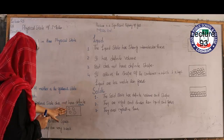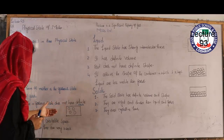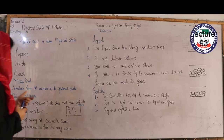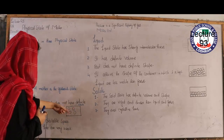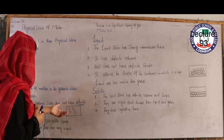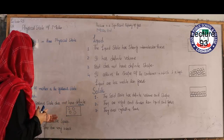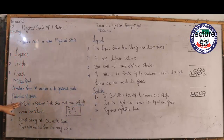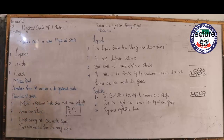Gas molecules possess high kinetic energy, and the reason for this kinetic energy is their movement. They have kinetic energy and weak intermolecular forces. The first property is that matter in the gaseous state does not have a definite shape or volume.